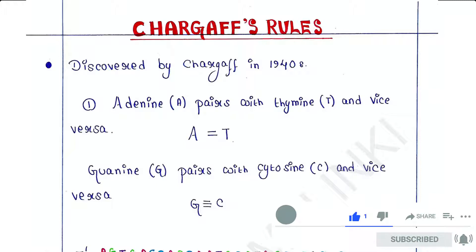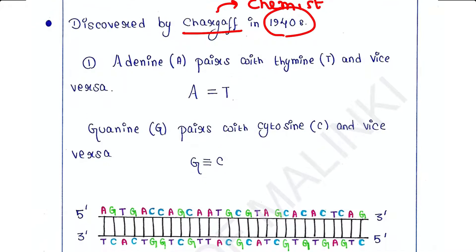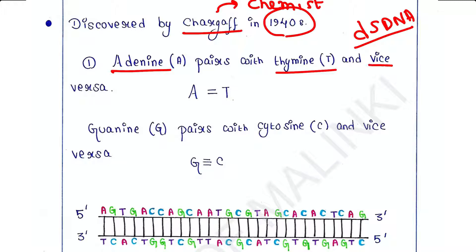Chargaff's rule was discovered by Chargaff — he was a chemist in the 1940s. He observed that in a double-stranded DNA — and note it is double-stranded DNA — adenine always pairs with thymine, and vice versa, meaning thymine always pairs with adenine.